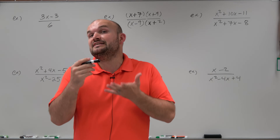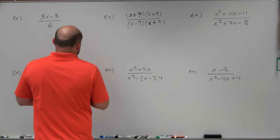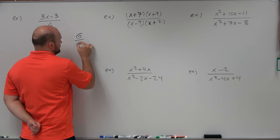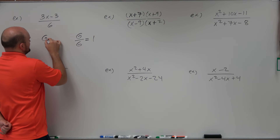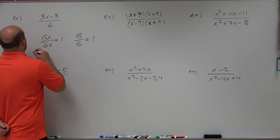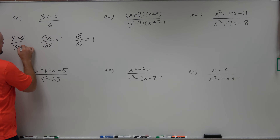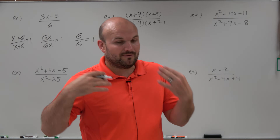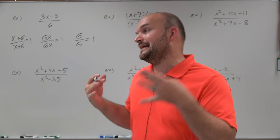First is the division property. Basically, the division property states that if we have a term or an expression divided by itself, that's going to equal 1. It doesn't matter if that's a number or an expression — even x plus 6 over x plus 6. As long as whatever's in the numerator and denominator are exactly the same, they're going to equal 1.